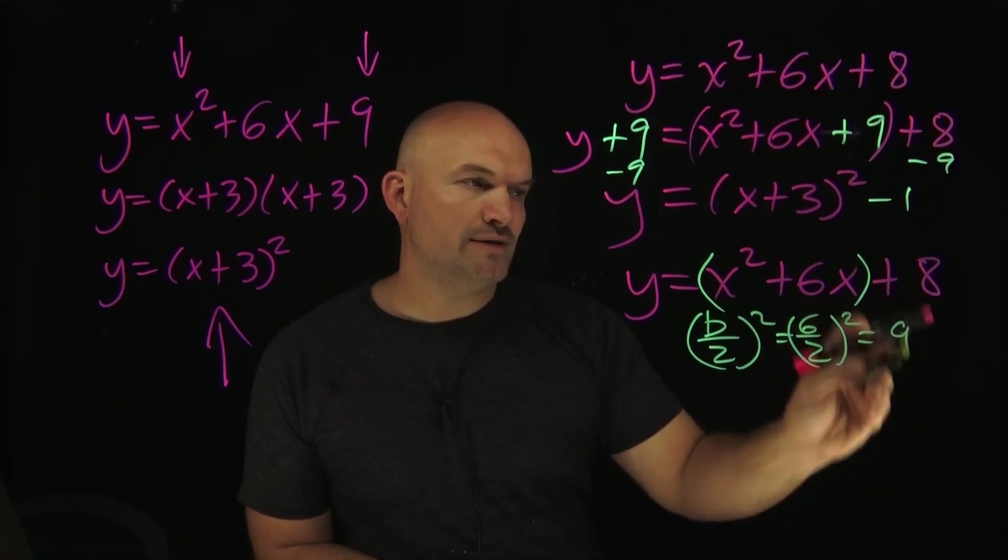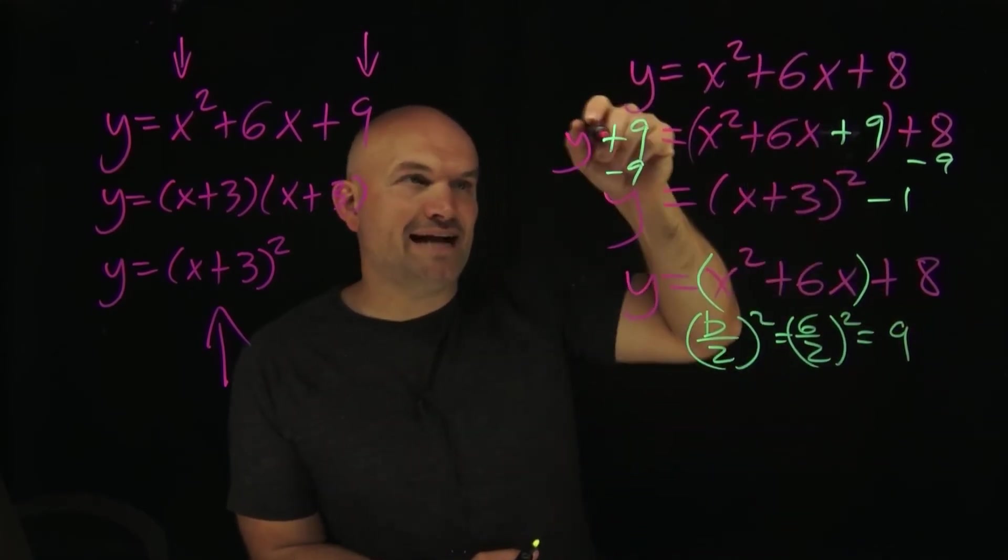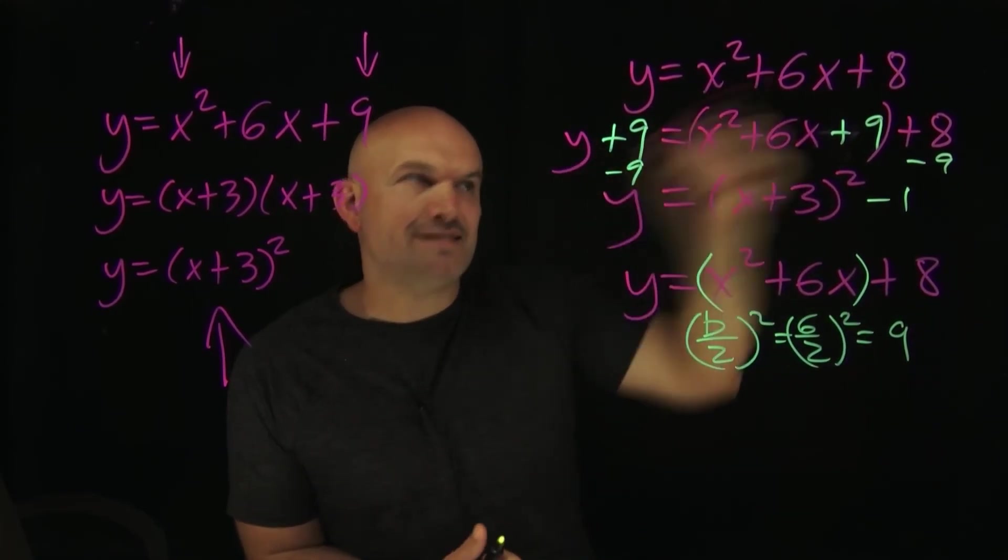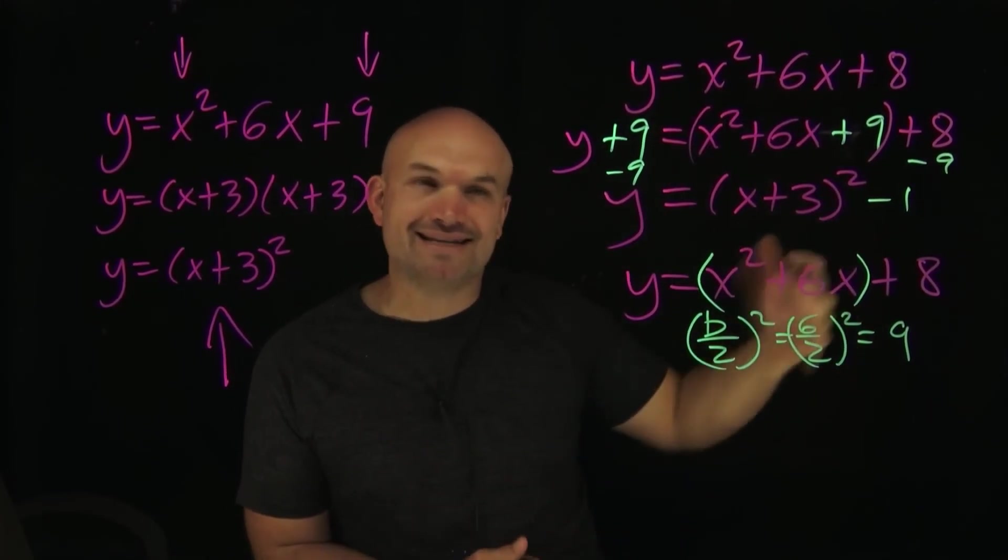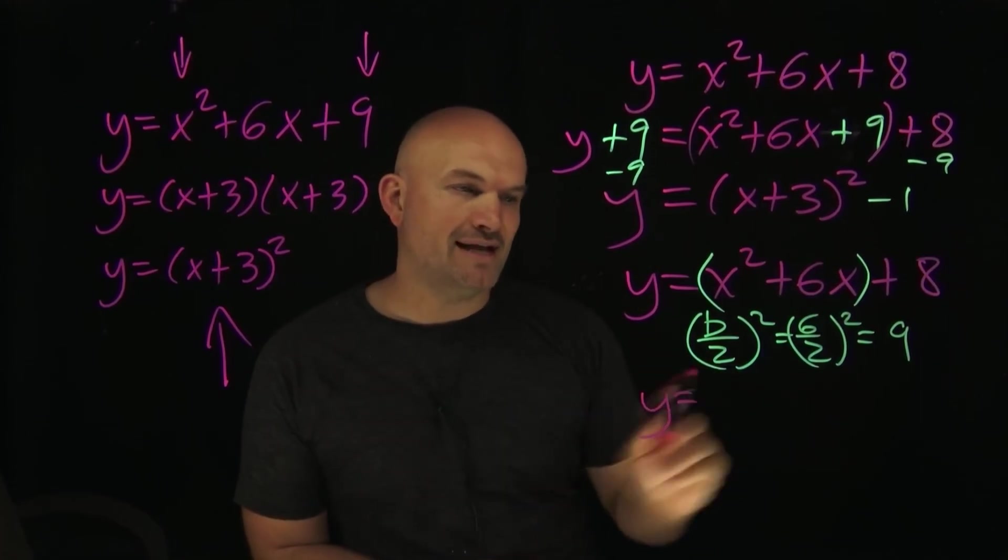Now rather than adding a 9 to both sides—notice what I had to do, I just subtract it from both sides to solve for the y—so what I like to do is I like to add and subtract it on the same side.